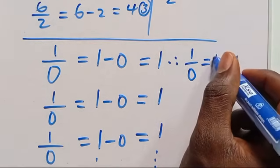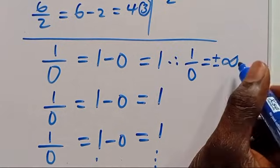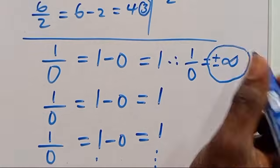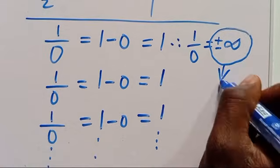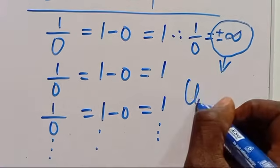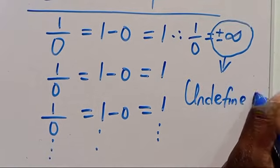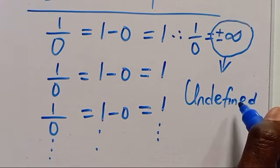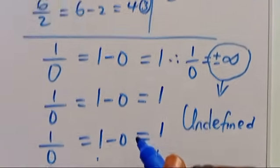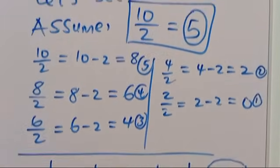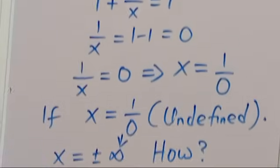It can be positive or negative infinity. That is why this idea is referred to as undefined, because it is not defined. So let's check another method — Method 2.